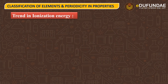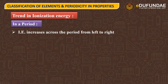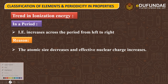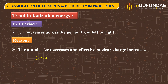Dekhi aap ke paas trend kaise hooga? Agar ham period mein baat karein, as you move from left to right in the period, the ionization energy increases. Ab iska reason kya hai? Jaysay aap period mein move karein ga, aapka atomic size decrease kareega, nuclear charge increase kareega, aur aapko pata hai that your atomic size is inversely proportional to ionization potential and your nuclear charge is directly proportional to ionization potential.